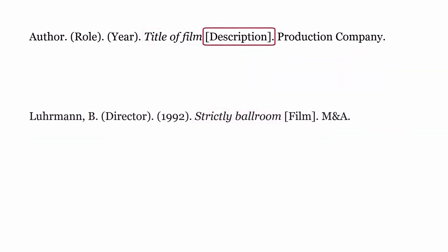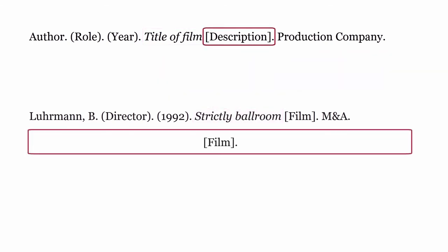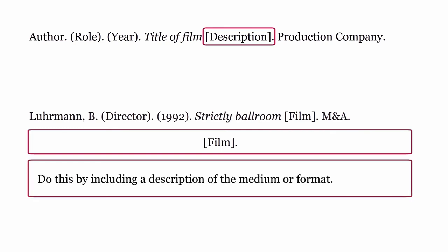After the title, describe the work. Do this by including a description of the medium or format. For films, we use the word film. The description is surrounded by square brackets. End the description with a full stop.